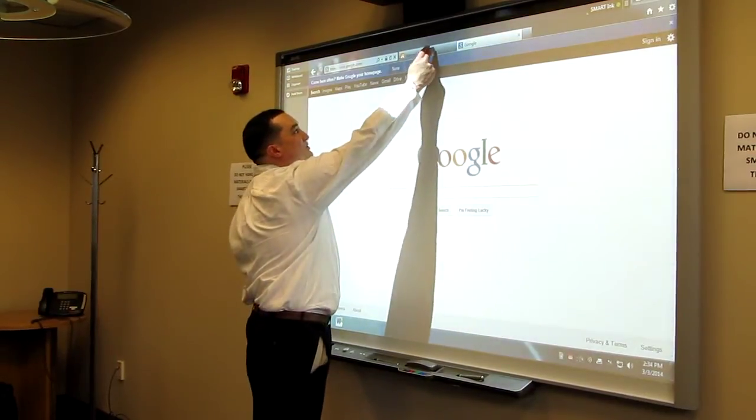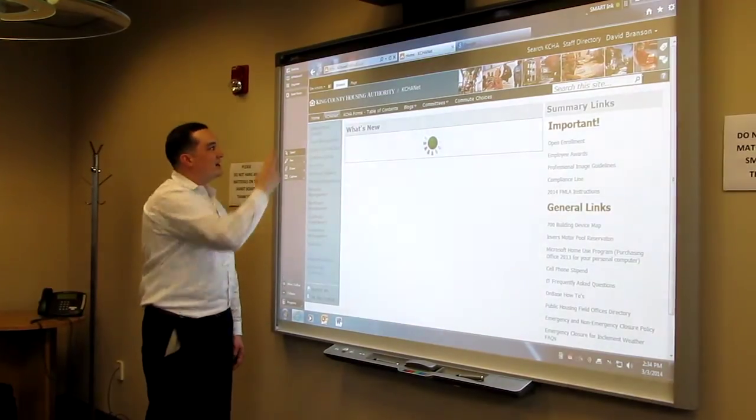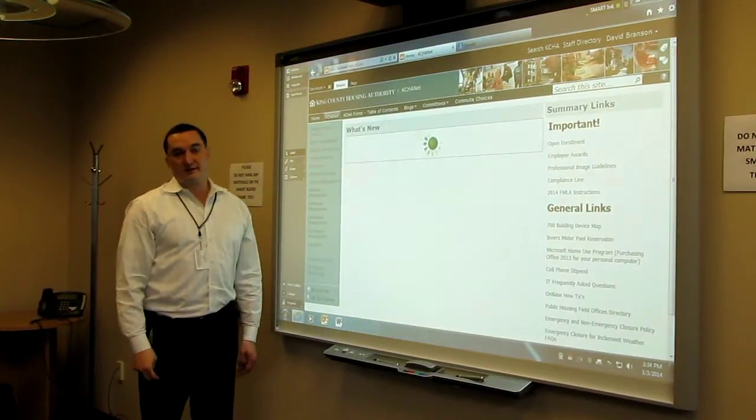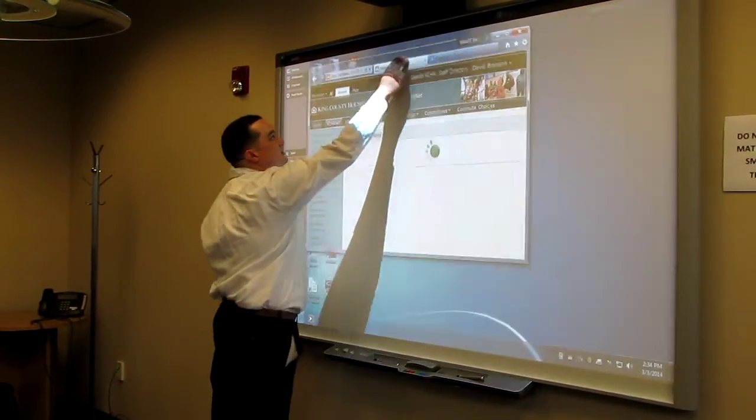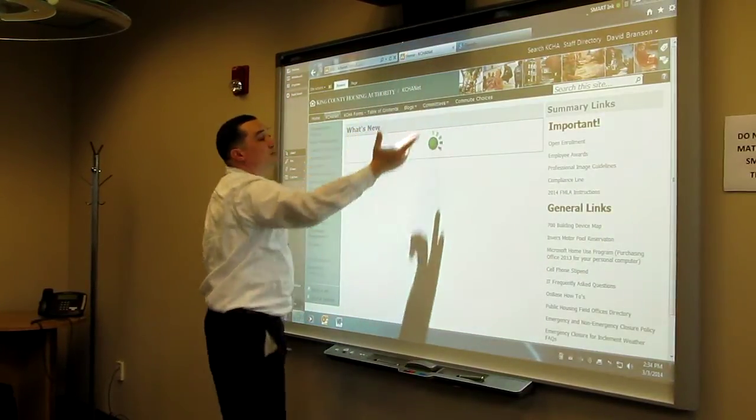I can select a program and here I'm in Google. I can go to your home page for King County Housing Authority and notice I touch. It's a left click. I touch and drag. It is a click and hold and drag with the left mouse button.